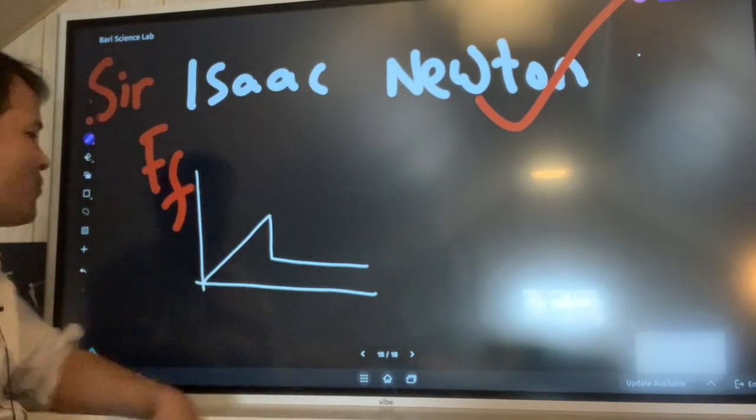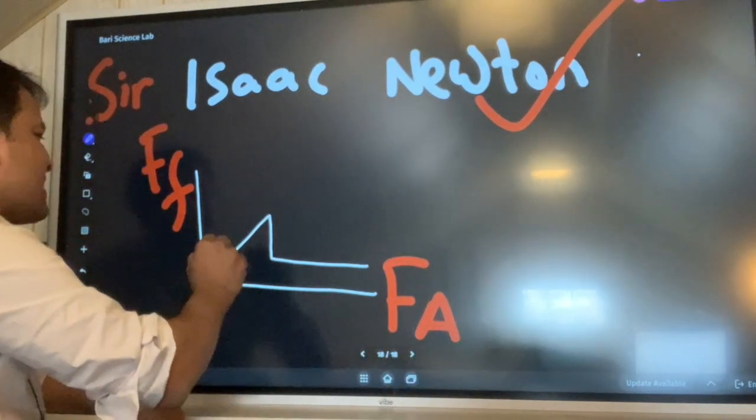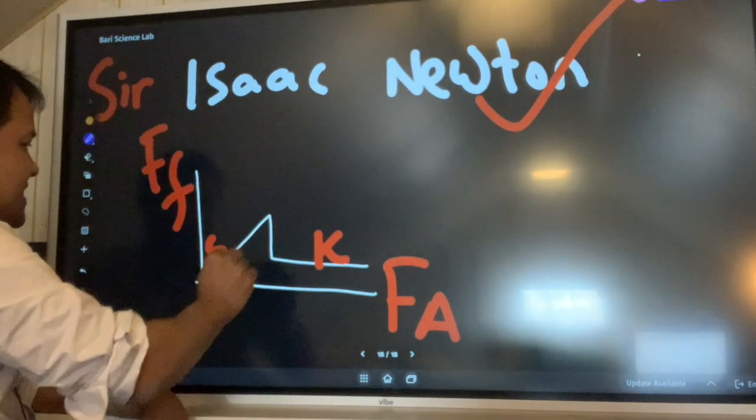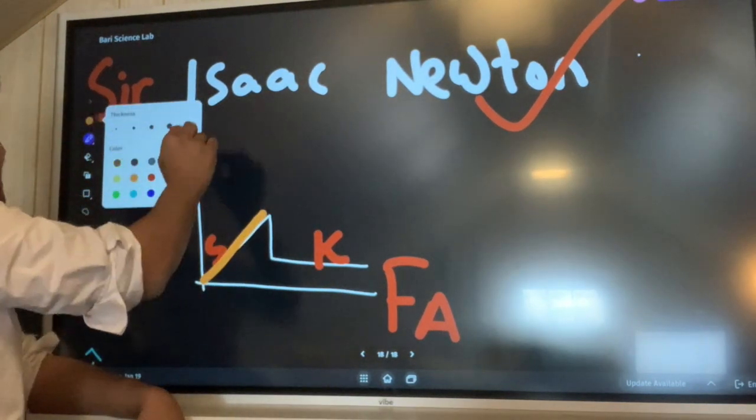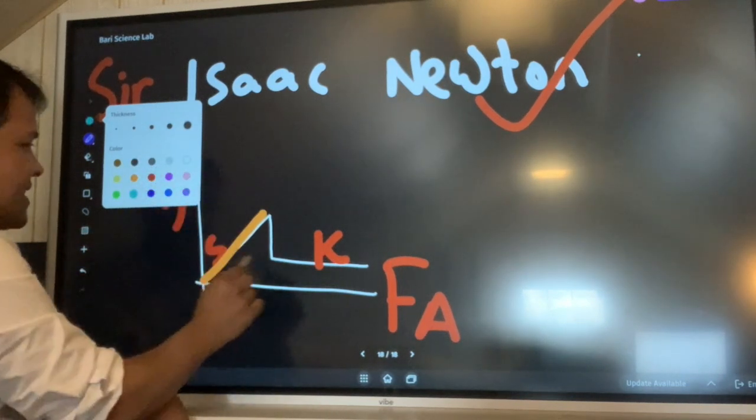This is called a friction graph and today I'm going to help you understand it. This is force of friction on the y-axis, applied force on the x-axis. This is the static friction and this is kinetic friction.